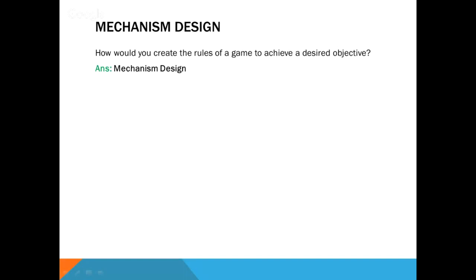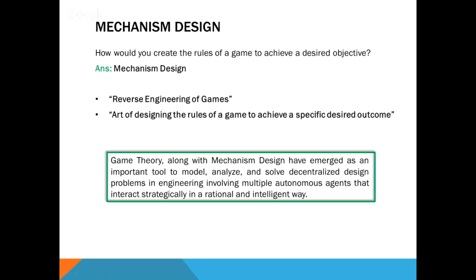Let's now ask a different question: how would you create a game to achieve a desired objective? The answer is Mechanism Design. Mechanism Design is also called reverse engineering of games — it is the art of designing the rules of a game to achieve a specified outcome. In particular, game theory and mechanism design has emerged as an important tool to model, analyze, and solve decentralized design problems involving multiple autonomous agents that interact strategically in a rational and intelligent way.